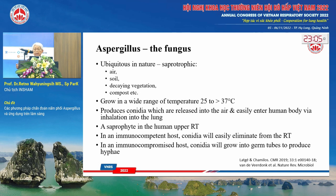In an immunocompetent host, Aspergillus will be eliminated from the body and does not cause disease. But if we are immunocompromised, it will cause disease. It produces a germ tube and then hyphae, which penetrate the human body.